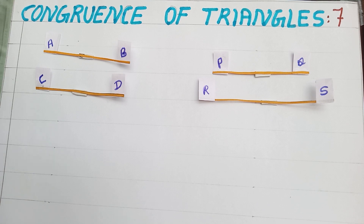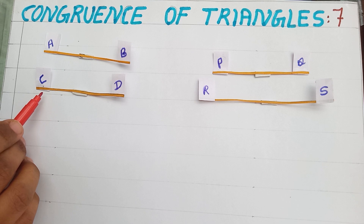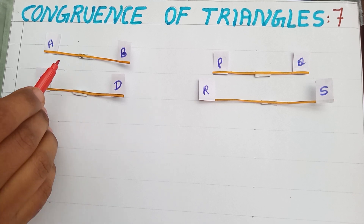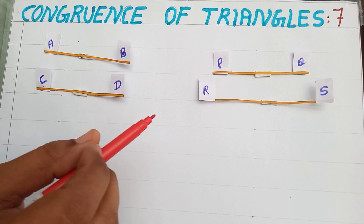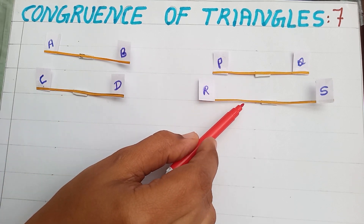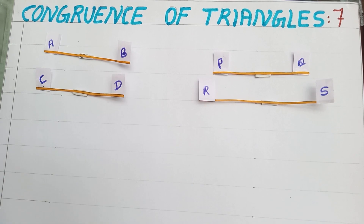From these two examples, we can say that if two line segments have the same length, we can say that these two lines are congruent. If two lines are not having the same length, we can say that these two lines are not congruent.